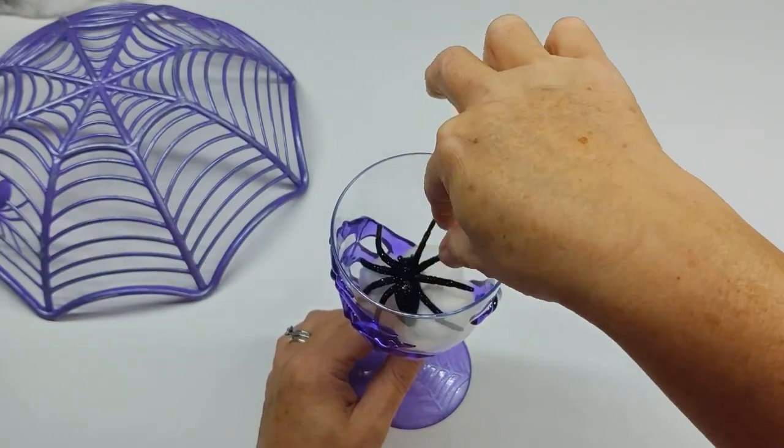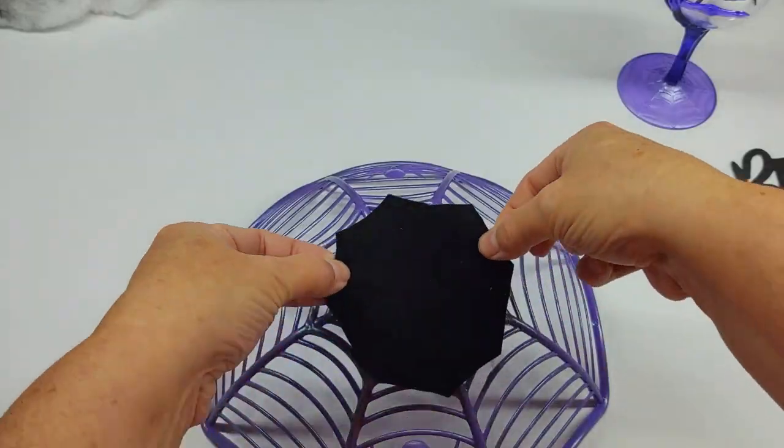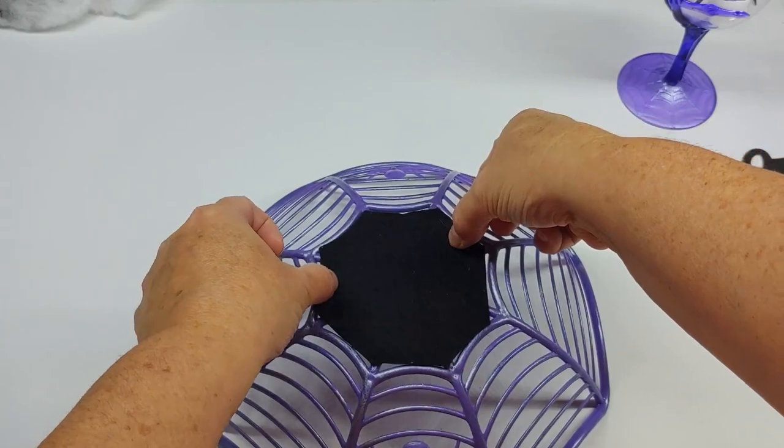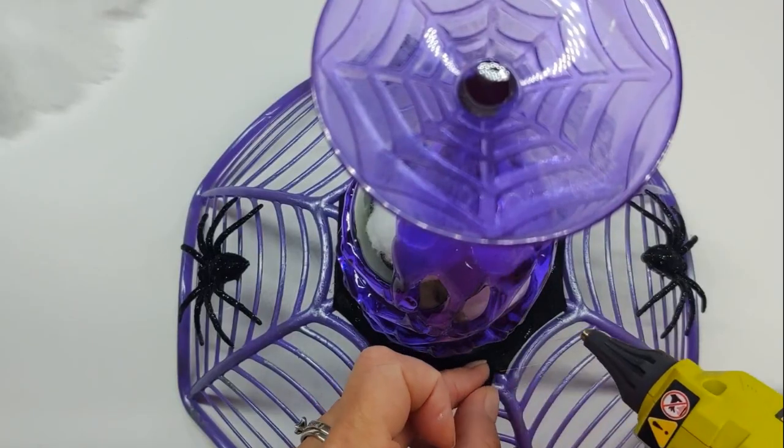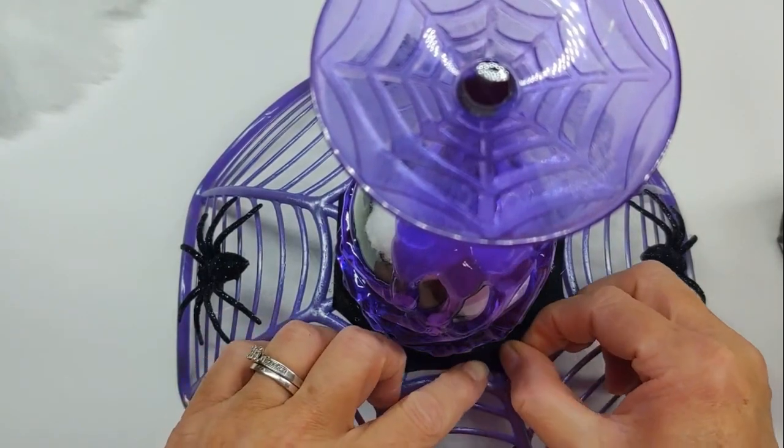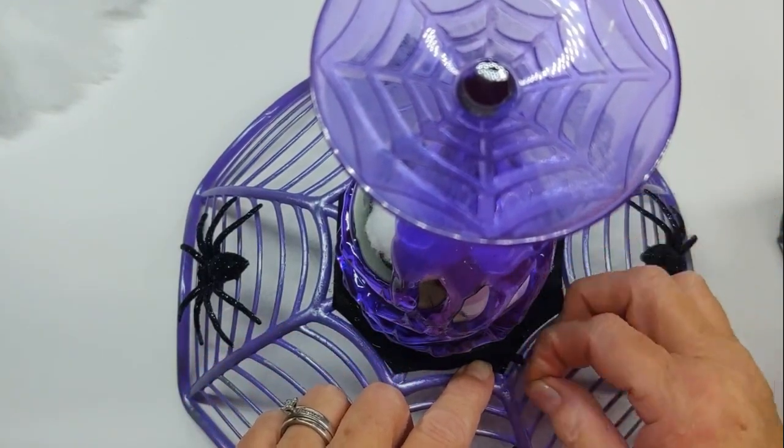I did end up hot gluing these down off camera. I cut out felt and glued it to the bottom of the dish, then glued spiders to every other section. I hot glued the goblet to the bottom and also glued down a strip of felt to clean it up a bit.